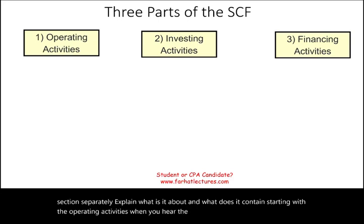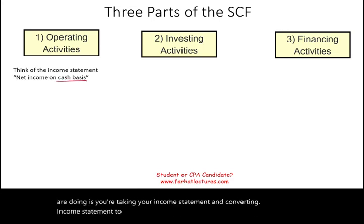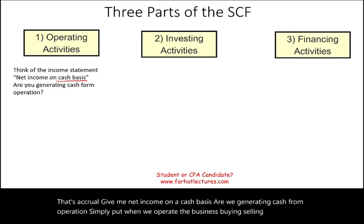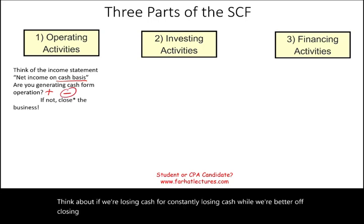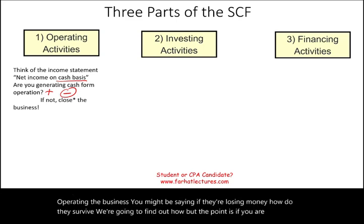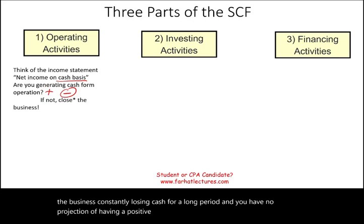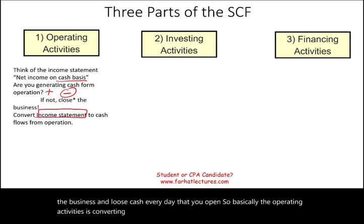When you hear operating activities, think of the income statement. What you are doing is taking your income statement and converting it to cash basis. You have net income — that's accrual — but give me net income on a cash basis. When we operate the business — buying, selling, day-to-day operations — are we generating cash or losing cash? If we're constantly losing cash for a long period with no projection of positive cash, consider closing the business. The operating activities section converts the income statement to cash flow from operations. The items involved are the income statement, current assets, and the change in current liabilities.